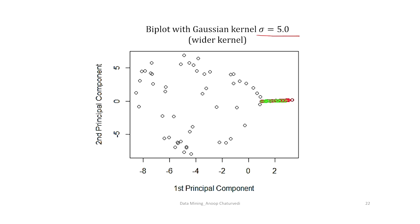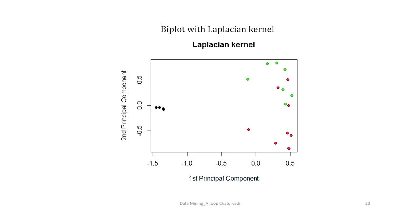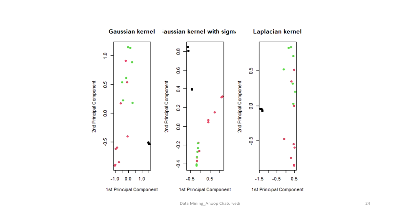For σ = 5, the kernel is even wider than for σ = 2. We also produced a biplot for the Laplacian kernel and compared the three kernels. If you change the kernel function in kernel PCA, the biplots also change, so you have to be careful while choosing the kernel function for your problem — which kernel function best suits your data?